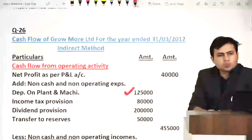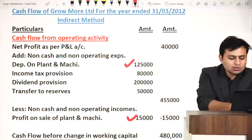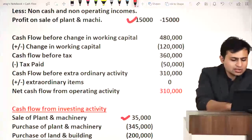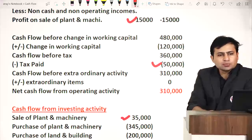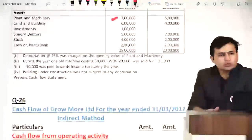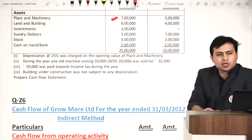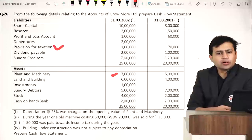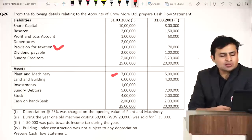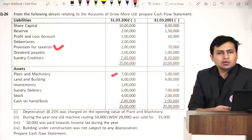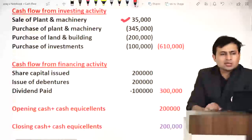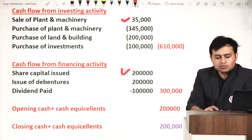Point four: building under construction — no depreciation, no effect. Now reading balance sheet items. Share capital: opening 8 lakhs, closing 10 lakhs — 2 lakh increase, financing activity inflow — issue of share capital 2 lakhs. Reserves: opening 1 lakh 50,000, closing 2 lakhs — 50,000 transfer to reserves from profit, shown as add-back in operating activity. P&L balance: opening 60,000, closing 1 lakh — current year profit 40,000, starting point of cash flow.